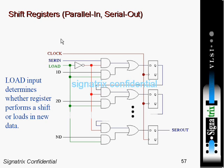This is parallel in serial out. Here you see one load pin. When this load pin is enabled, whatever value you want to load, you can load those values with ports 1d, 2d, nd into the D flip flop. After that, if you want to perform serial operation, you can disable the load pin and enable the serial in pin, and you can perform shift operations. So this is parallel in serial out.